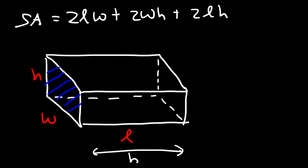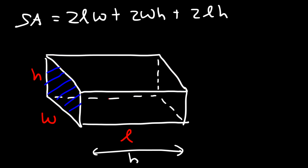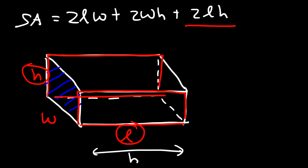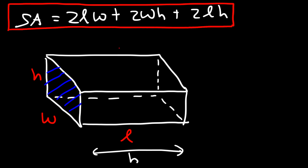To understand the surface area formula: the left and right sides each have area W times H, giving 2WH. The top and bottom each have area L times W, giving 2LW. The front and back faces each have area L times H, giving 2LH. You find the area of each of the six faces and add them up, or simply use the formula.